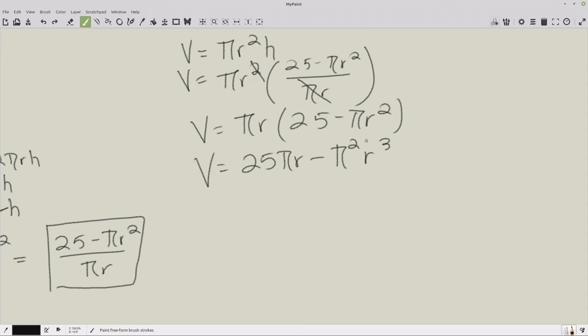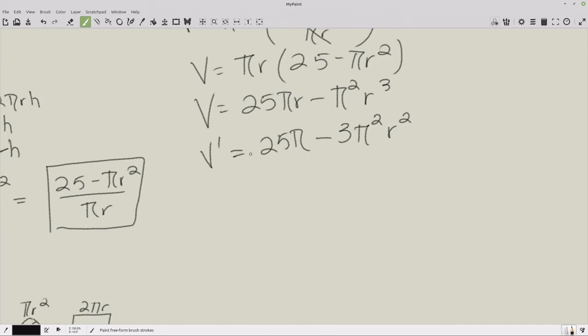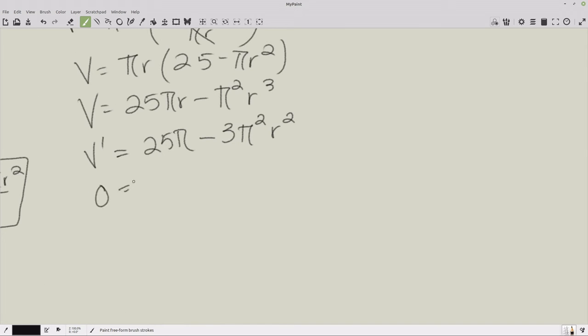So 25 pi and pi squared are constants. I don't need to worry about that. But my r is a variable. I want to find the derivative of this function with respect to r. I'm going to call it v prime. So we have 25 pi r becomes nothing. It becomes a 1 minus pi squared stays the same. The 3 from the r comes down. You get 3 and it becomes a 2. So you get 3 pi squared r squared. And again, we're looking for the slope where m equals 0. Or in this case, v prime equals 0. Let's just put 0 there.